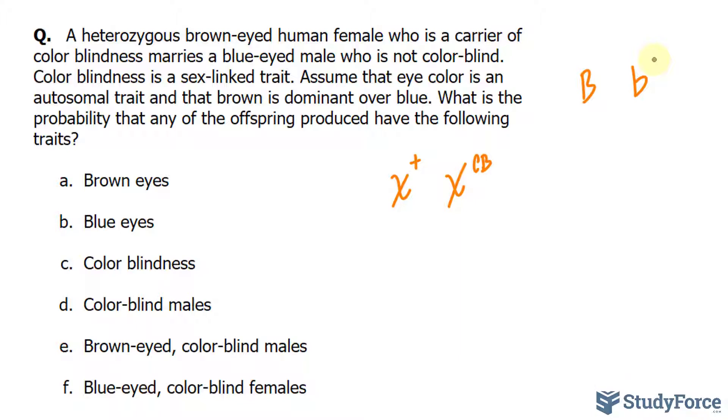Since this female is heterozygous brown-eyed, her genotype is big B, little b. You need two little b's to be blue-eyed. Otherwise, any other combination is brown eyes. So that's the genotype for the female.